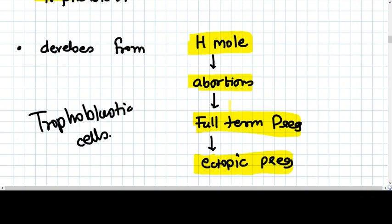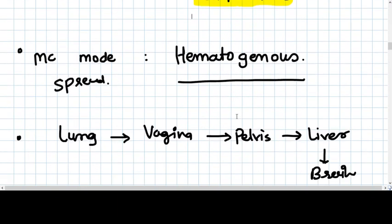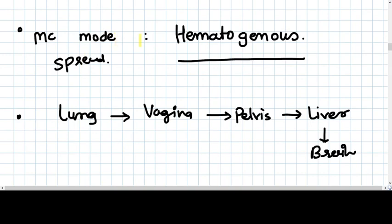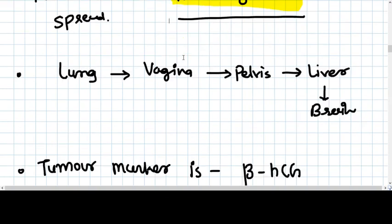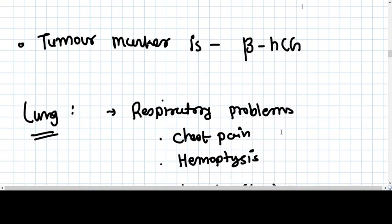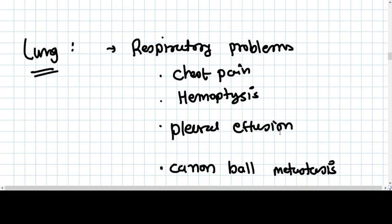For development of choriocarcinoma, we need trophoblastic cells. Most common mode of spread is hematogenous spread, and the most common site of spread is lung, followed by vagina, upper third vagina, pelvis, liver, and last brain. Tumor marker is obviously the beta-HCG.